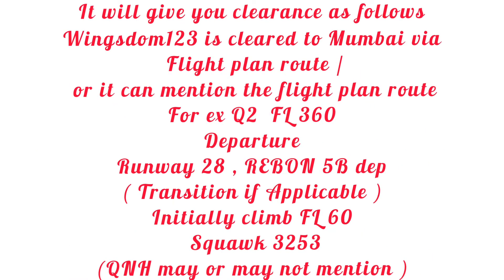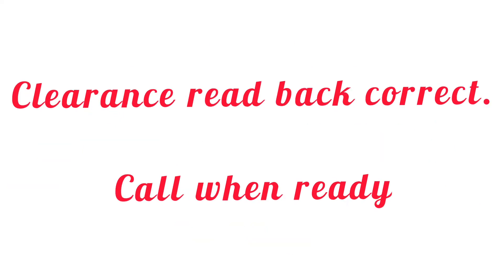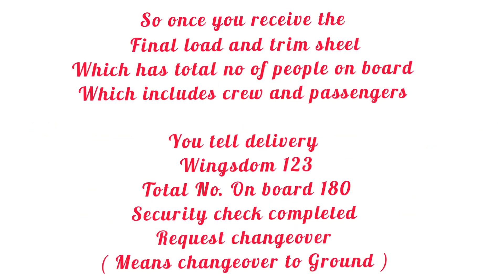ATC would issue clearance as: 'Wingsdom 123 is cleared to Mumbai via flight plan route, or Quebec 2, Flight Level 360, departure runway 28, Reborn 5 Bravo departure, squawk 3253' — which is your SID, Standard Instrument Departure — along with transition if any, and initially climb Flight Level 60. Your readback would be: 'Wingsdom 123 is cleared to Mumbai via Quebec 2, Flight Level 360, runway 28, Reborn 5 Bravo departure, squawk 3253.' ATC would then say 'Readback correct, call when ready,' and your reply would be 'Will do,' meaning will comply.